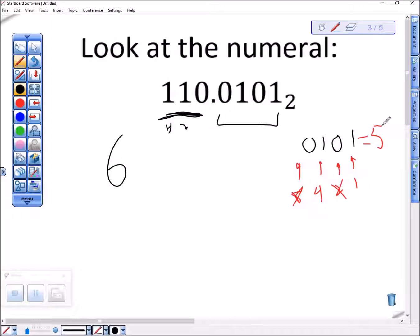That means that this is five - halves, quarters, eighths, sixteenths. This number is six and five sixteenths. And the way I did that was I took this part after the radix point.